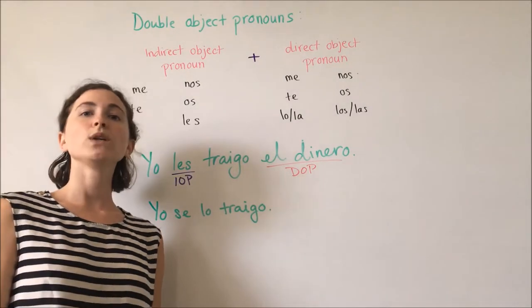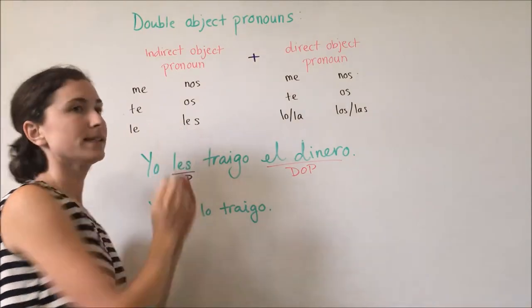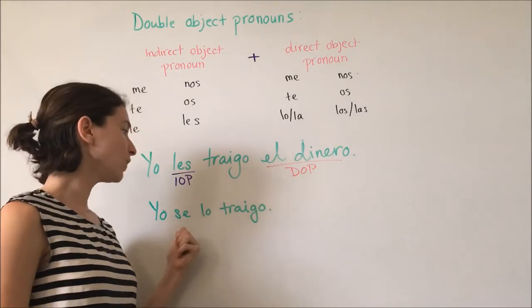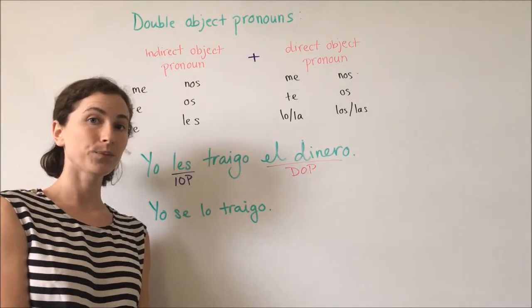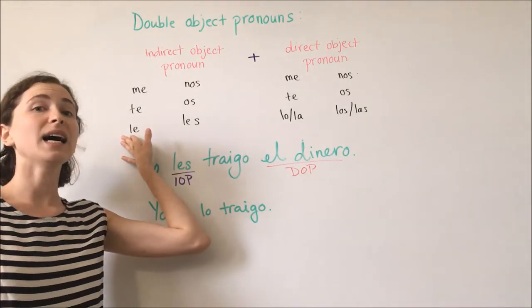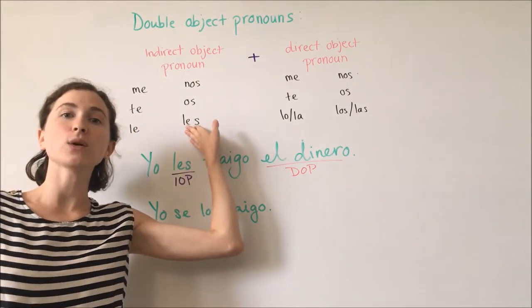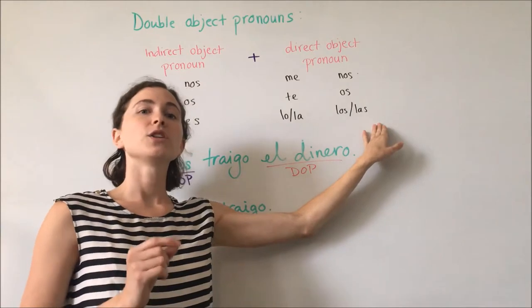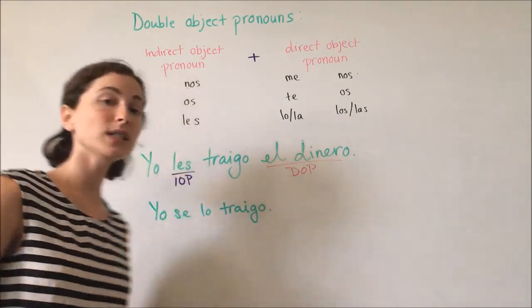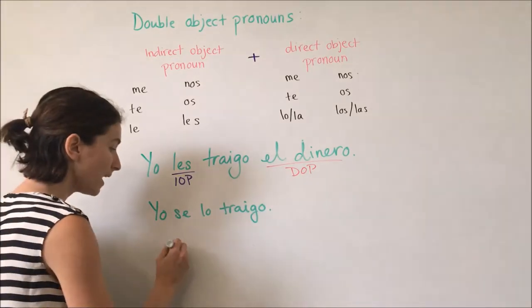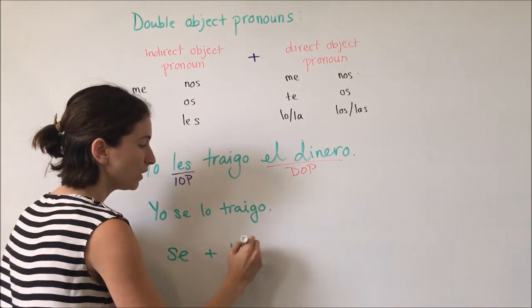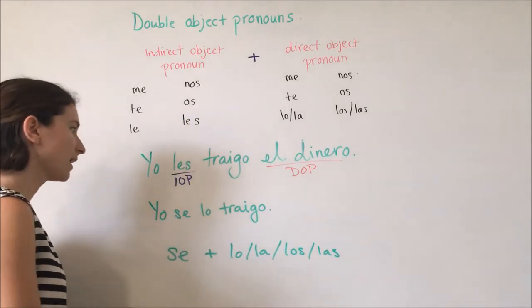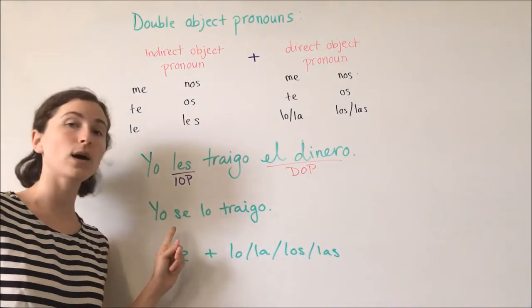In Spanish, we do not put 'le' or 'les' next to 'lo,' 'la,' 'los,' or 'las' — it is very difficult to say. Instead, we change it to 'se.' So, if you have a él, a ella, a usted, a ellos, a ellas, or a ustedes, along with lo, la, los, or las, to put our indirect object and direct object pronouns together, you will have 'se' and then lo, la, los, or las. The le or les is now 'se.'